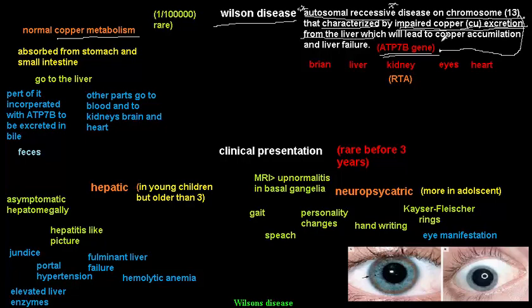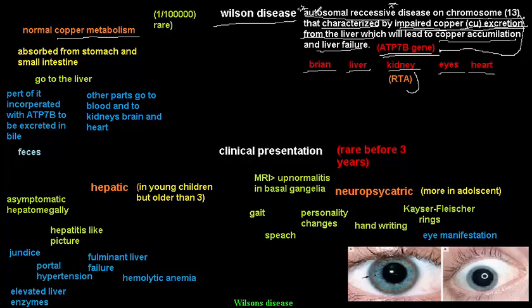Impaired excretion leads to copper accumulation not just in the liver, but in other organs: the brain, kidneys, eyes, and heart. This causes problems such as renal tubular acidosis in the kidneys, eye symptoms, and various hepatic disorders. Wilson disease is rare, affecting about 1 in 100,000 people.